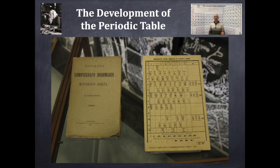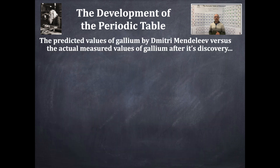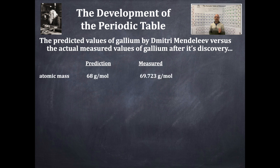Mendeleev's original periodic table had lots of missing gaps — and that is key. He predicted values for gallium before it was discovered. The predicted atomic mass was 68 g/mol, and what was measured was 69.723 g/mol — that prediction and the discovery coincided. That is amazing.